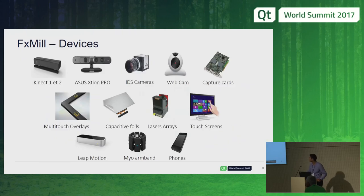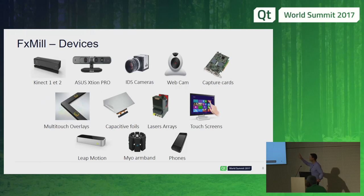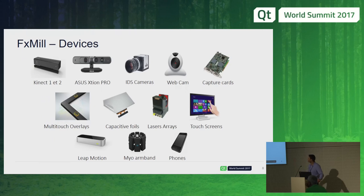There are many types of sensors. I want to highlight the difference between IDS cameras and webcams: all webcams are 30 frames per second, which is good for video chat but not for interactivity. For interactivity I use IDS professional cameras, which can go 60, 120 fps and above. You also have standard capacitive multi-touch screens, the laser LiDAR array I showed earlier, and I've also played with Leap Motion, Myo armband, and similar devices.